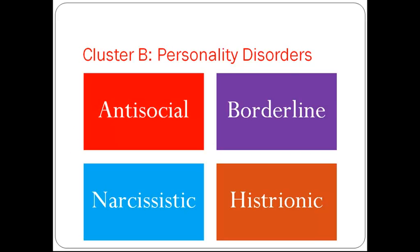Cluster B personality disorders feature dramatic, emotional, or erratic behaviors. Typically present in early adulthood, persons often show problems with impulse control, emotional processing and regulation, and interpersonal difficulties. To get their needs met, these individuals may resort to behaviors that are desperate or entitled, including acting out, anti-social acts, or manipulating people. Persons with these personality disorders come into contact with healthcare providers directly with depression, substance abuse, self-harm, or suicide, or indirectly through acting out that leads to interaction with the legal system.